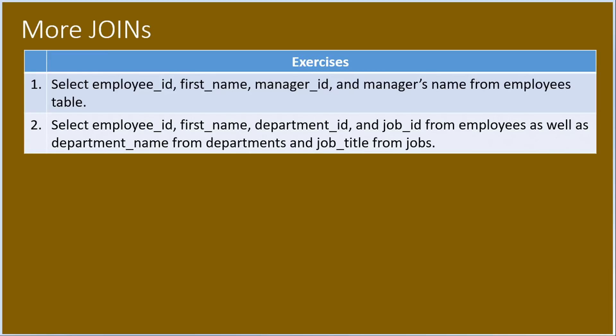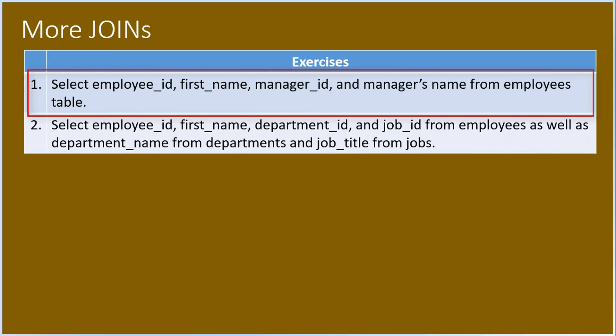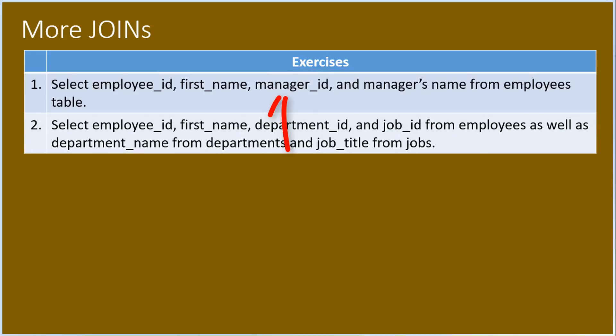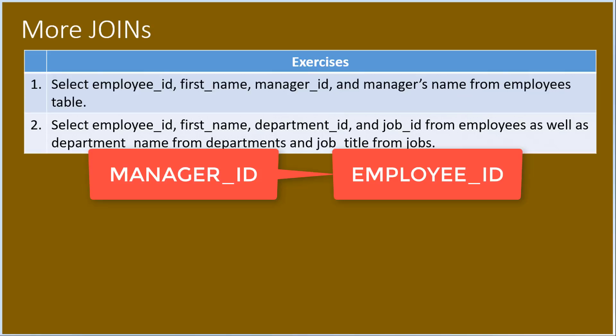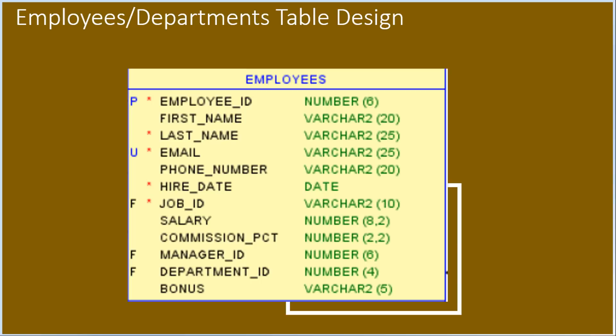In number one, we will select employee ID, first name, manager ID and manager's name from the employees table. You may wonder what is that manager ID and where can we get his name? Actually, the manager is also an employee, so manager ID may refer to that employee ID on the same table employees. This is the reason why there's a line from the employees table that points back to itself. We will use self-join to solve this.